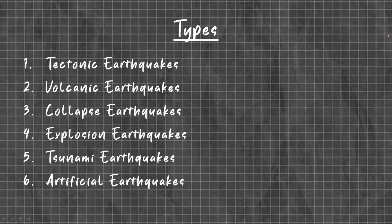So what are the types of earthquakes? The first one is tectonic earthquakes. Second, volcanic earthquakes. Third, collapse earthquakes. Fourth, explosion earthquakes. Fifth, tsunami earthquakes. Sixth, artificial earthquakes.